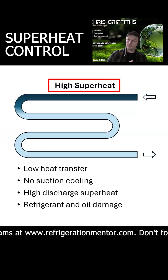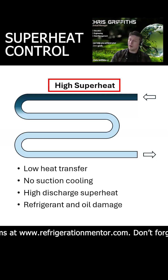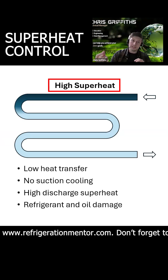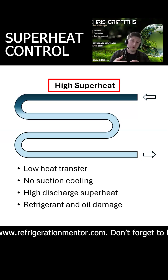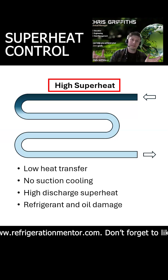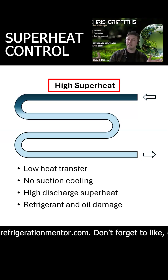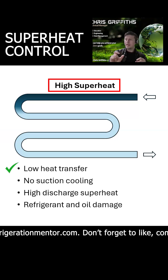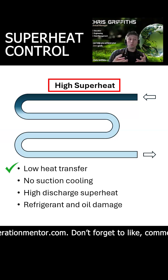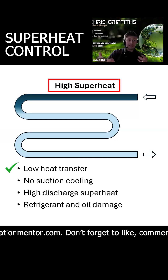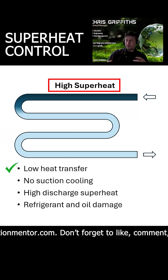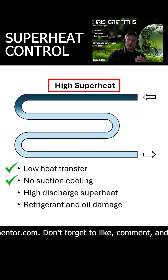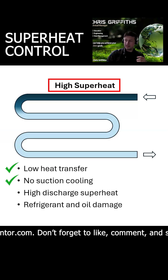Whereas on the other side, we have high superheat where that refrigerant is boiling off almost immediately as it goes into the coil. You may be only using 50% of the usable actual surface area, so we get very low heat transfer. The refrigerant gets warmer and warmer because it's already boiled off, and we have very little or no suction cooling back to our compressors.